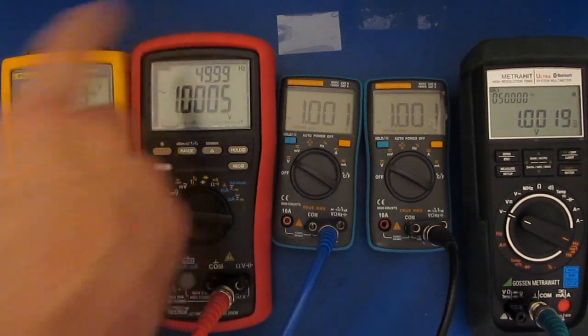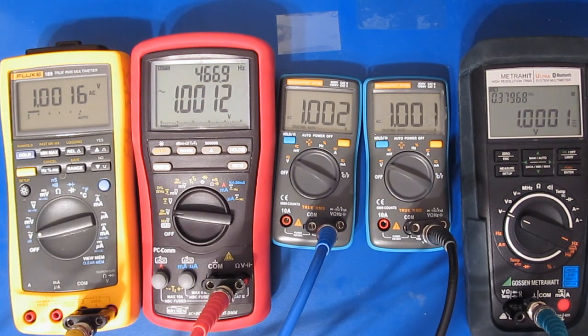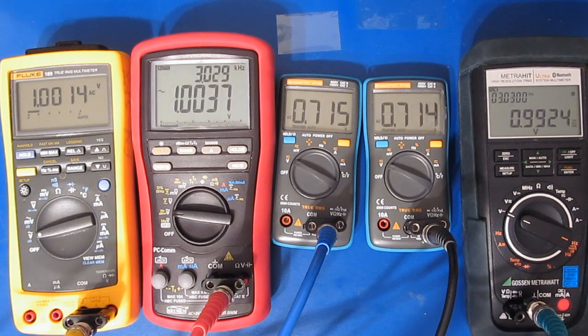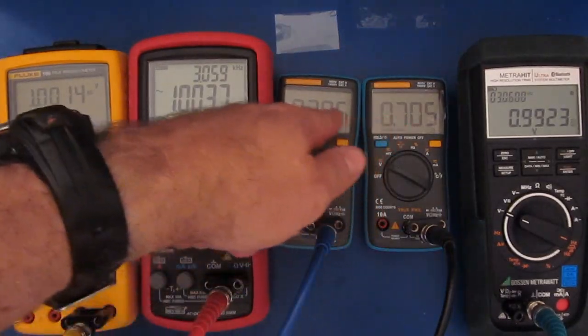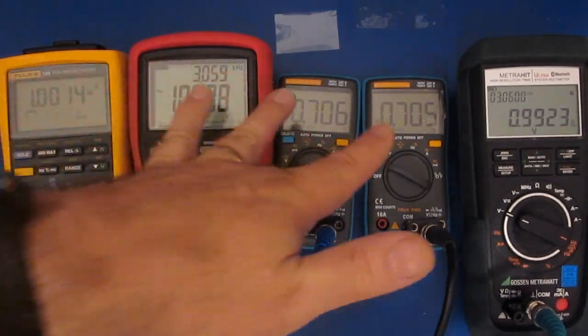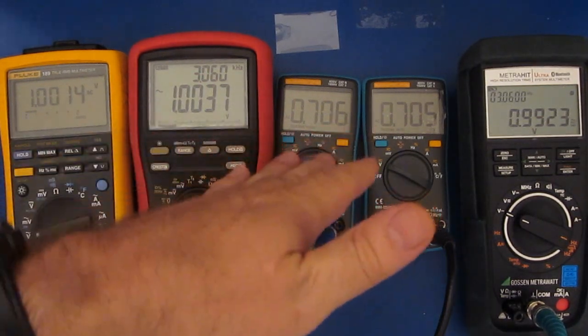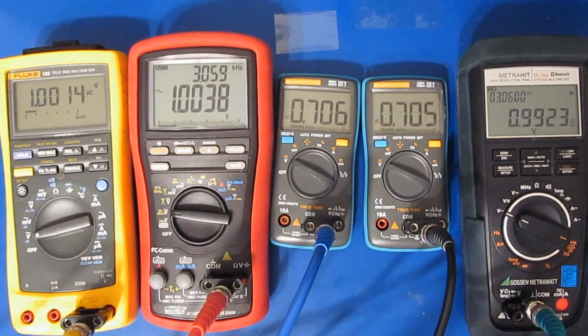You can see the same thing in the Brymen and this is about it. You can see the roll off for these two meters is basically still identical. We're at 3.06 kilohertz right now. Let's just go ahead and we'll take them up a little higher.